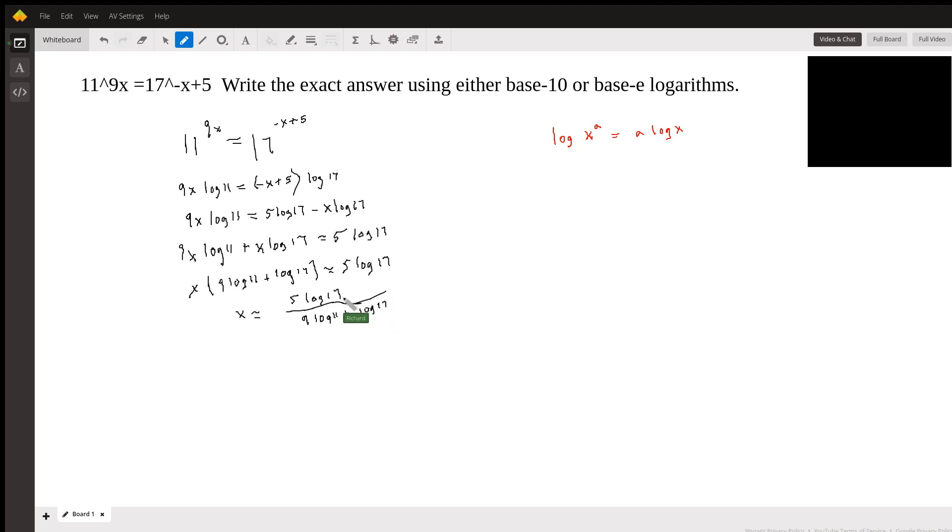And you just look these up on your calculator. So we already found that the log 17 is 1.23. So this is just 5 times 1.23. Now the log of 11 is 1.04. So 9 times 1.04 plus 1.23. And then you just work that through on your calculator and you have the answer.